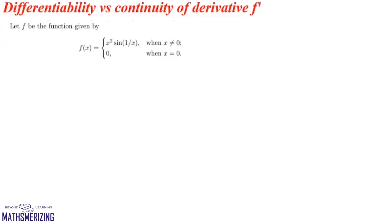Today we will discuss the difference between differentiability and continuity of the derivative f'. We will begin with an example. We are given the function f(x) defined as x²·sin(1/x) when x ≠ 0, and 0 when x = 0.